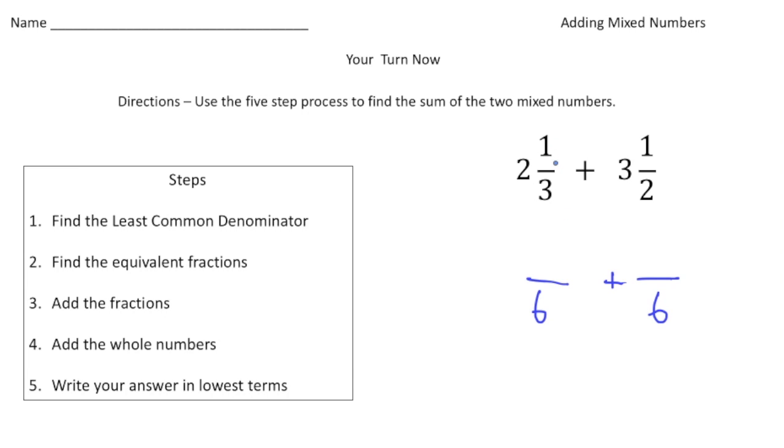Then you had to rename these. So one third equals two sixths, and one half equals three sixths. Now I can add the fractions. Two sixths and three sixths equals five sixths. Now we need to add the whole numbers. So two plus three is five. Five and five sixths, that's our answer. Five sixths is in lowest terms. So there it is. Alright how'd you do?